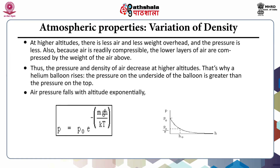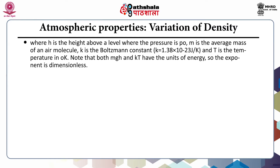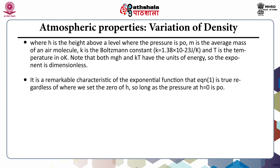This figure shows how air pressure falls exponentially with increase in altitude. The mathematical form is P = P₀ × e^(−MGH/KT), where H is the height above a level where pressure is P₀, M is the average mass of an air molecule, K is the Boltzmann constant (1.38 × 10⁻²³ joules per Kelvin), and T is the temperature in Kelvin. Note that both MGH and KT have units of energy, so the exponent is dimensionless. This equation is true regardless of where we set the zero of H, so long as the pressure at H = 0 is P₀.